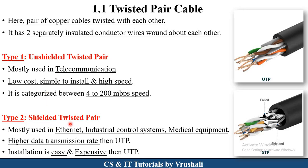The next type is shielded twisted pair cable. This shielded twisted pair cable is mostly used in Ethernet, some industrial control systems, or in medical equipment like sonography machines and X-ray machines. There are some copper cables or conductor wires wound and twisted with each other. This shielded twisted pair cable has a higher data transmission rate compared to unshielded twisted pair cable. It has easy installation but is more expensive than unshielded twisted pair cable.